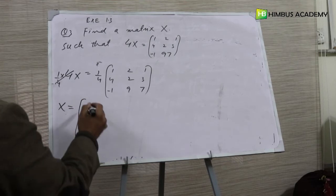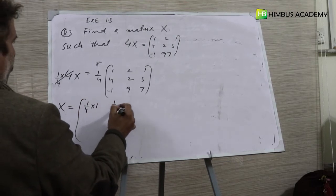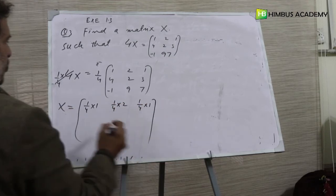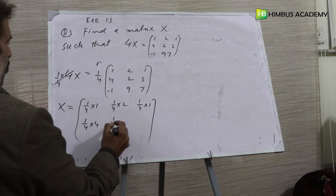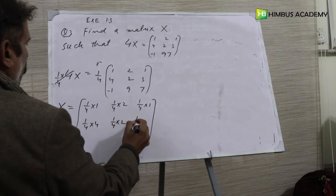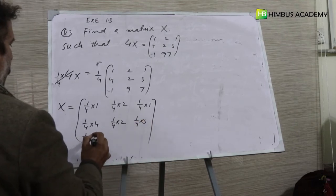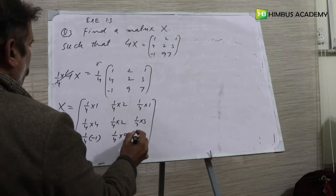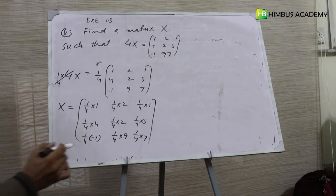Now you have to multiply 1 over 4 with each and every element x. So 1 over 4, 1 over 4 multiply 4, 1 over 4 multiply 2, 1 over 4 multiply 3, 1 over 4 multiply minus 1, 1 over 4 multiply 9, 1 over 4 multiply 7. Now you can simplify what can be simplified.